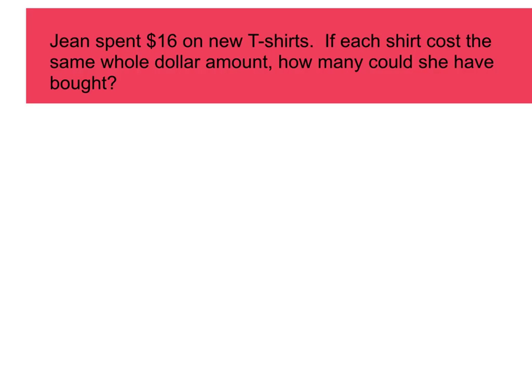So let's read this word problem. It says, Jean spent $16 on new t-shirts. If each shirt cost the same whole dollar amount, how many could she have bought? In order to answer this question, you need to find your factors of 16. So let's think about my factors of 16. I know 1 times 16. First of all, you always want to start with 1 and itself and then work your way towards the middle. I know 2 times 8, and I know 4 times 4. So those are going to be my factors of 16.